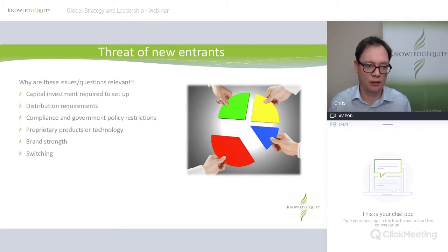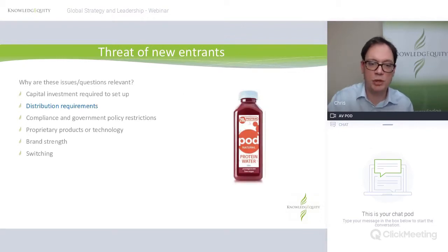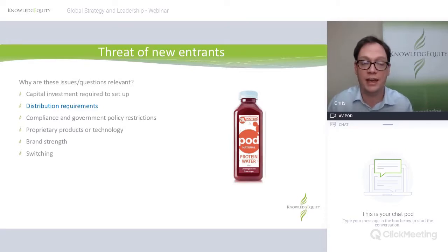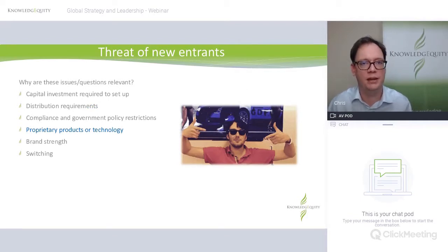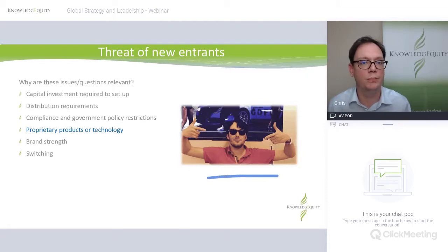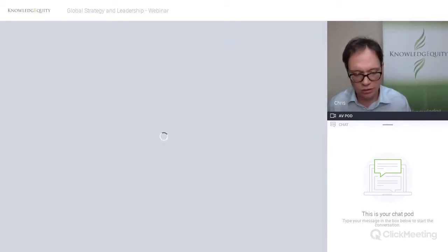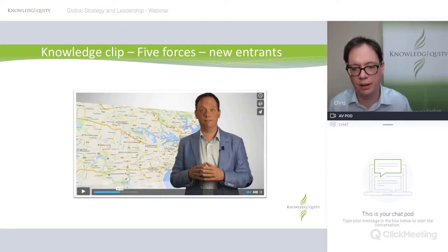Why are these issues relevant in terms of the threat of new entrants? Distribution requirements — if you don't have assets to distribute yourself, you've got to use somebody else and get into certain stores. When you're competing with large competitors, that can be a real barrier to entry. Proprietary products or tech: this gentleman bought the proprietary rights to a drug used to treat people with HIV and jacked the price up through the roof — he had bought the proprietary rights to it. Have a look at that clip in terms of new entrants.